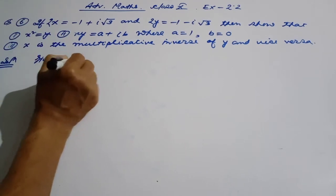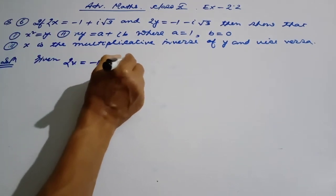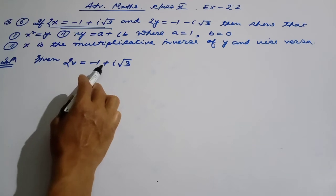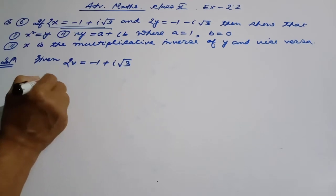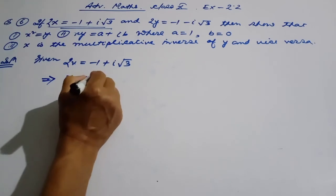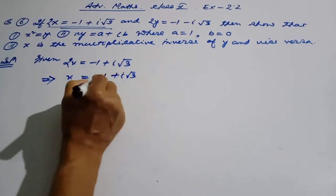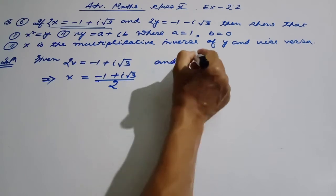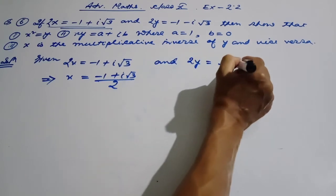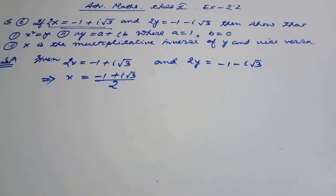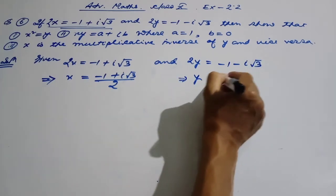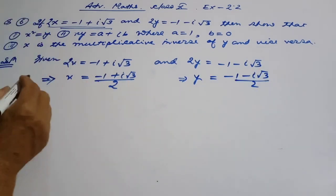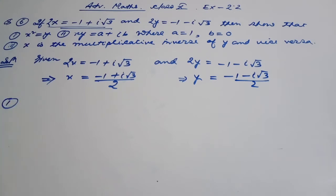So z is equal to y. And x equals minus 1 plus i root 3. Now let's see. The problem is x value. So x equal to minus 1 plus i root 3 by 2, and now 2y, y value is minus 1 minus i root 3 by 2.